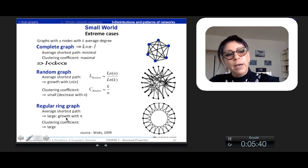At the opposite, we have the regular ring graph with an average shortest path which is quite large because it grows with n here. But the clustering coefficient which is quite large as well because there are a lot of triangles in the graph.